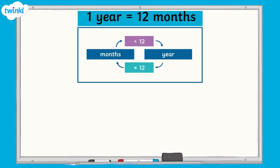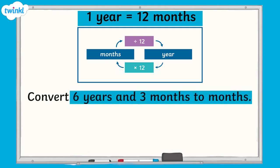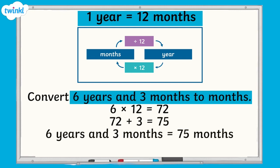Now let's take a look at how to convert between months and years. There are 12 months in a year. To convert years to months, we multiply the number of years by 12 and add on any remaining months. For example, to convert 6 years and 3 months to months, we would multiply 6 by 12, which equals 72, then add on the remaining 3 months. 72 add 3 equals 75, so 6 years and 3 months equals 75 months.